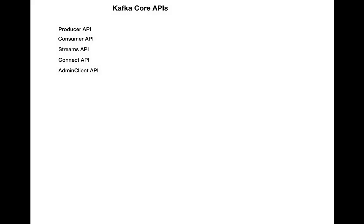Welcome back. As part of this video we're going to write a Kafka producer and Kafka consumer. We'll publish a message using the producer API and consume the message using the consumer API. In our other videos we set up the multi-node cluster, published messages using console producer, and consumed messages from console consumer. But as part of this video we're going to write the producer and consumer programs.